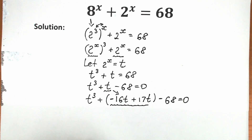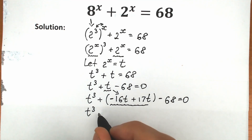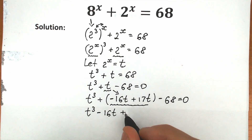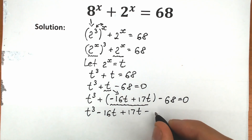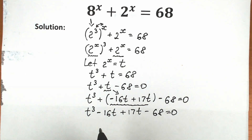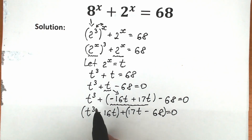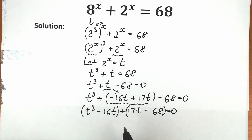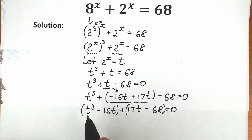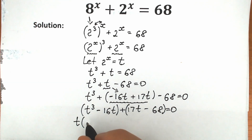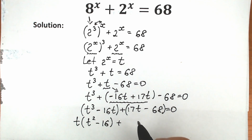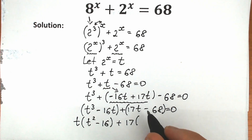Now let's group these elements in pairs. From the first pair, t cubed and minus 16t, we can factor out t, giving t times (t squared minus 16). From the second pair, plus 17t minus 68, we can factor out 17, giving 17 times (t minus 4), since 68 divided by 17 equals 4. So we have t(t squared minus 16) plus 17(t minus 4) equals 0.